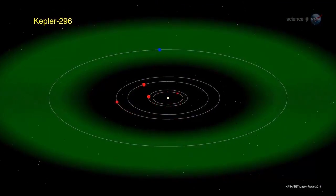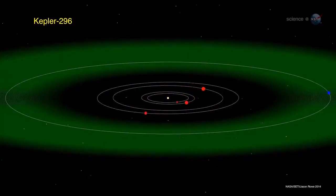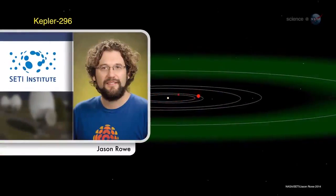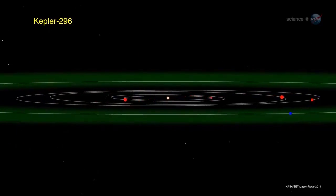This study shows us that planets in multi-systems tend to be small and their orbits are flat and circular, much like the inner parts of our own solar system, says Jason Rowe, a co-leader of the research at the SETI Institute.